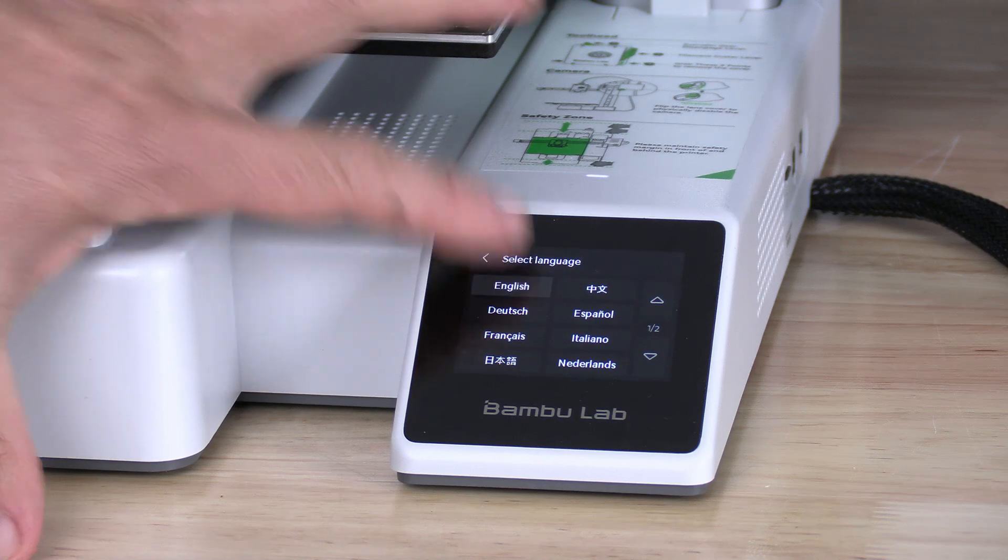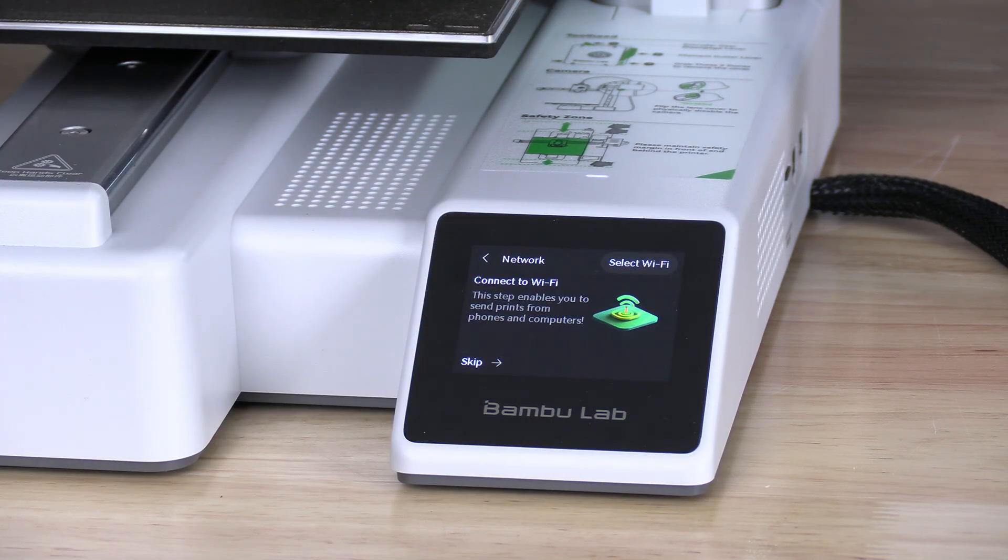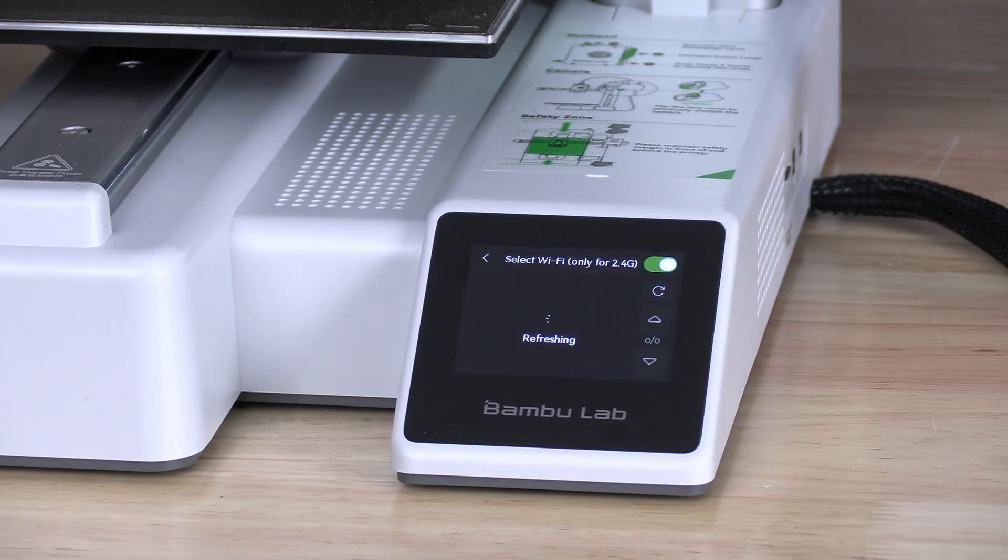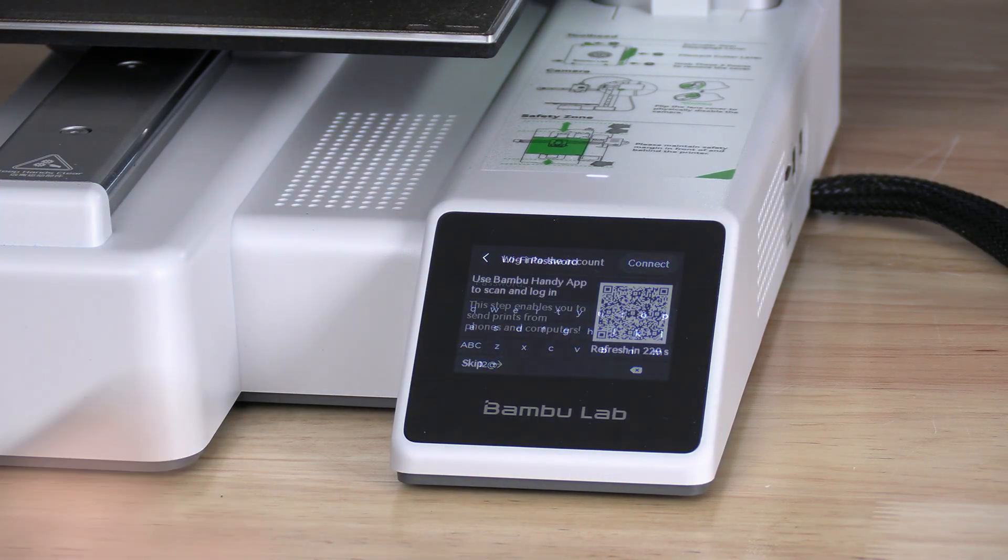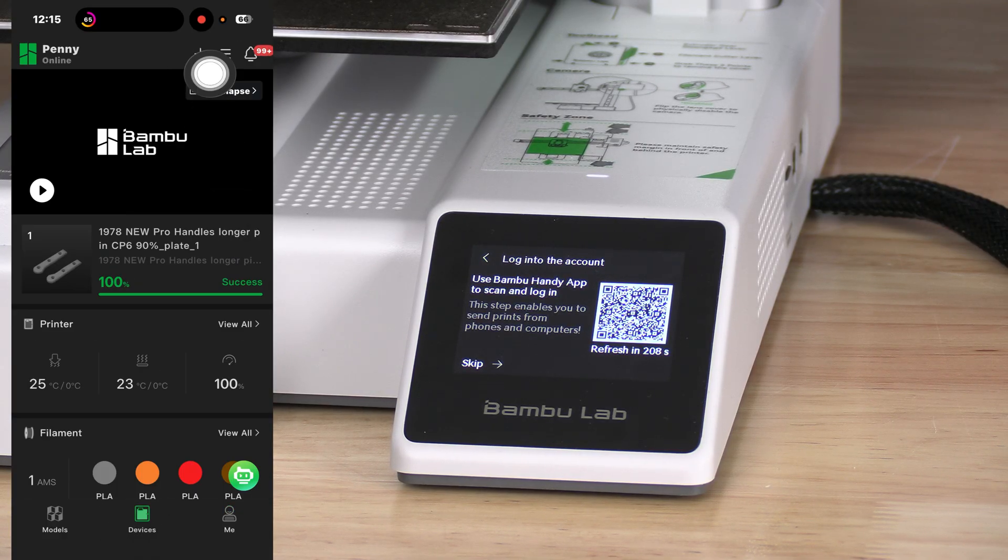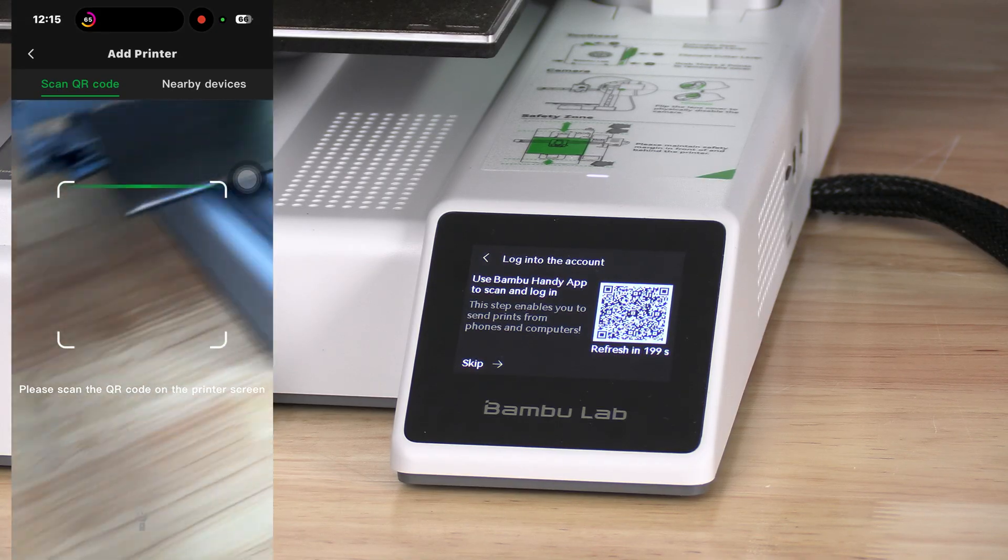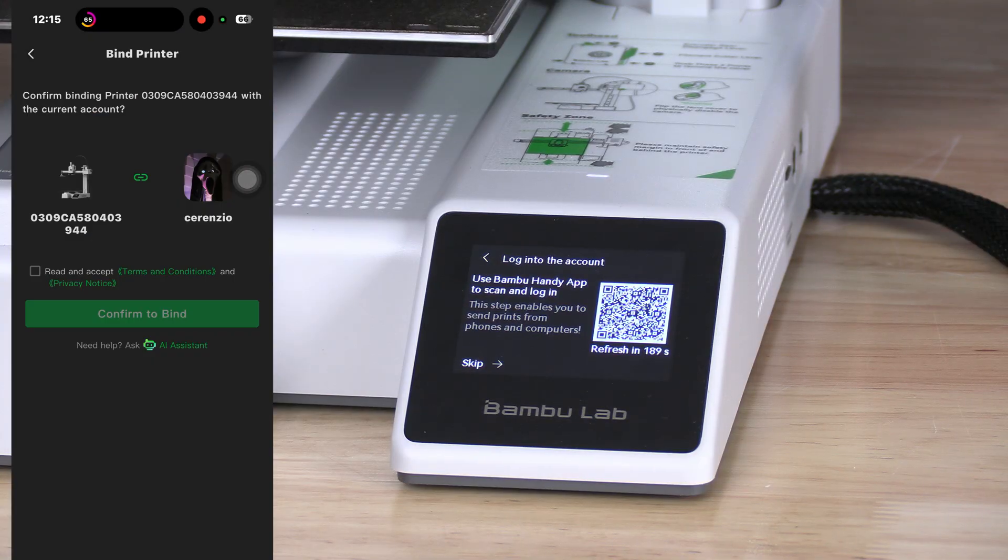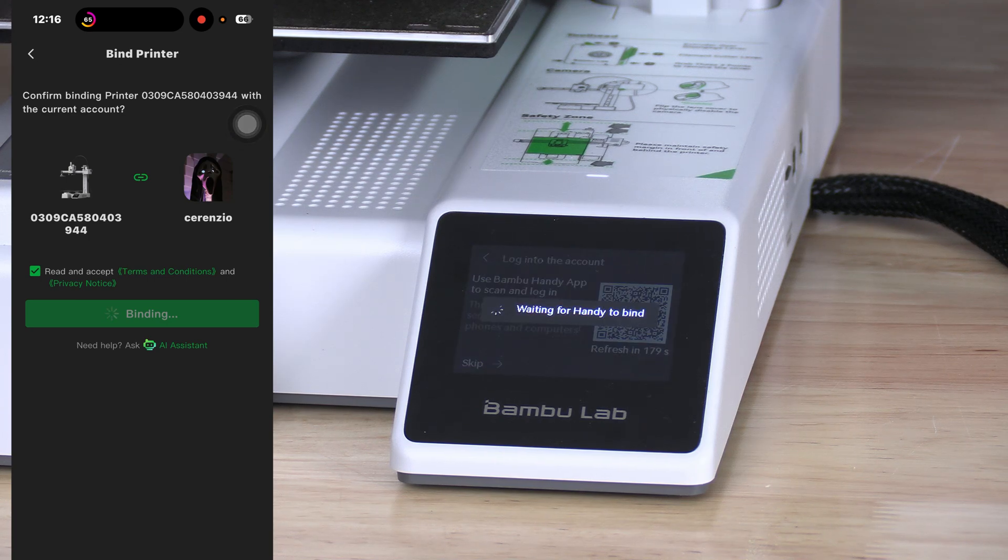Choose your language. Choose your region. Set up your Wi-Fi. Once connected, it will present you with a QR code. On your app, go to Devices, press Plus, and point your camera at the QR code. Check this box. Press Confirm to bind. Your A1 Mini is now bound to your Bambu account.